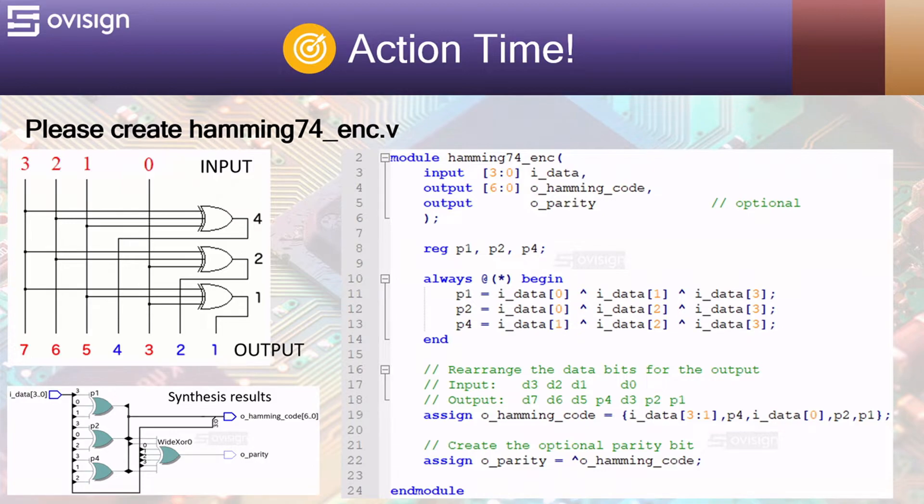Let's now analyze the Verilog code for this combinational circuit. At line 3 we have a 4-bit output and next we declare a 7-bit output for the Hamming 7 for encoder and an extra parity bit for the Hamming 8 for encoder. At line 8 we declare three internal reg variables for the parity bits. The variables are named according to the power of 2 position that they occupy. 2 at the power of 0 equals 1, thus we call the parity bit P1.